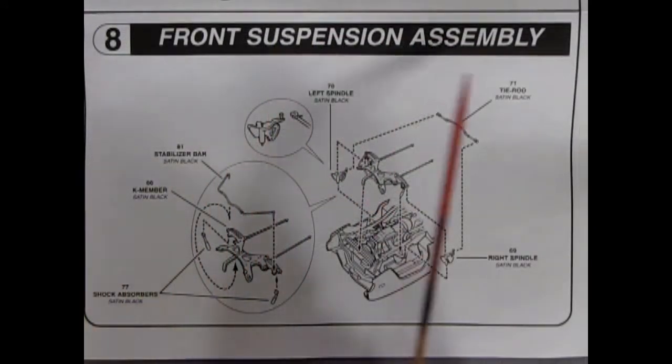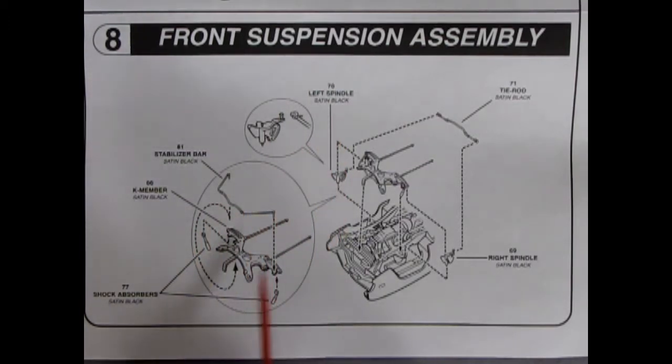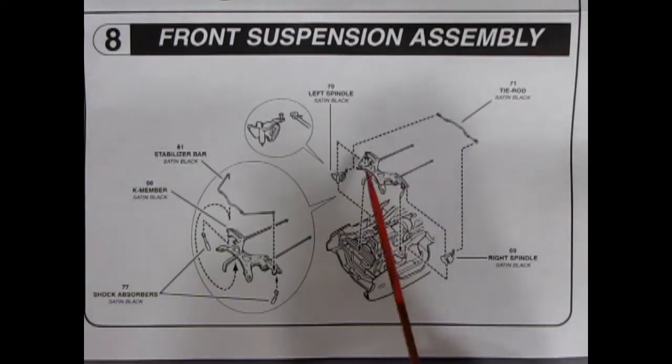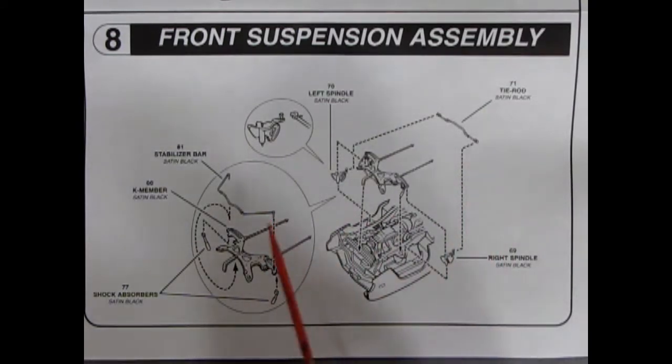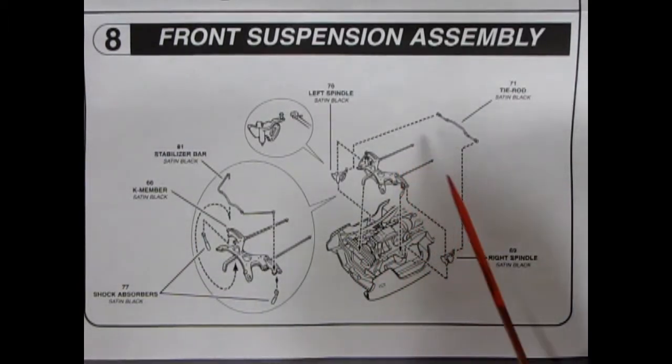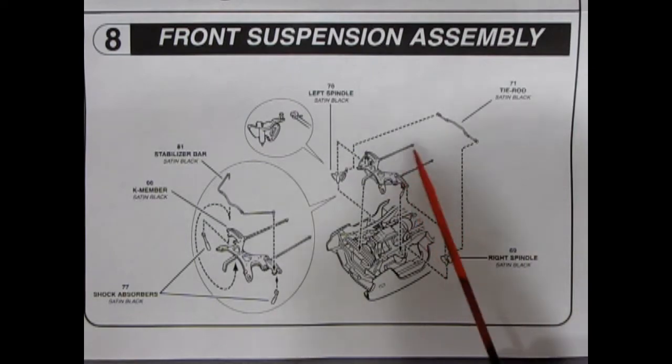Panel eight is our front suspension assembly and this has opposable wheels. So you get right and left spindle, you get this which is a K-member, pardon me, stabilizer arm, a tie rod and that all pops together. The shock absorbers go in and then you have your opposable steering. This of course is torsion bar suspension which was a wound up spring inside these tubes.